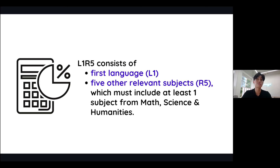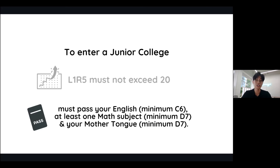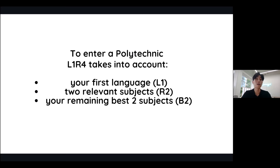To enter a junior college, you must meet two minimum criteria. The first is that your L1R5 in total must not exceed 20, and you must pass your English, at least one math, and your mother tongue. Now if you're looking to enter poly, your admission will be based on your L1R4 score. Your L1R4 takes into account your first language, two relevant subjects, and two of your remaining best subjects. The relevant subject depends on the course that you're looking to enroll into in polytechnic.